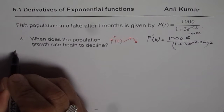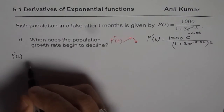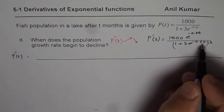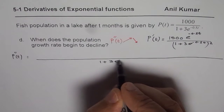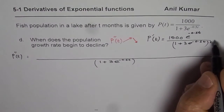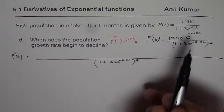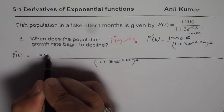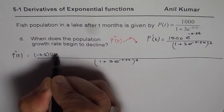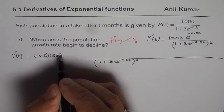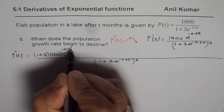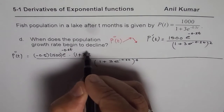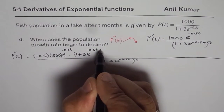Now we know the first derivative, and we will find the second derivative by applying the quotient rule. The denominator becomes the square of the denominator squared again, which is 1 plus 3 e to the power of minus 0.5 t to the power of 4. The derivative of the numerator part is 1500 times minus 0.5 times e to the power of minus 0.5 t, times the denominator 1 plus 3 e to the power of minus 0.5 t squared.